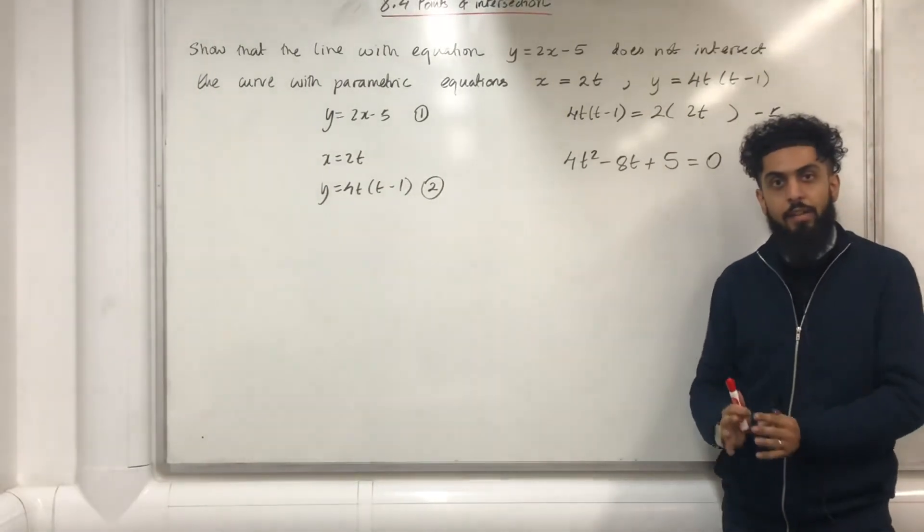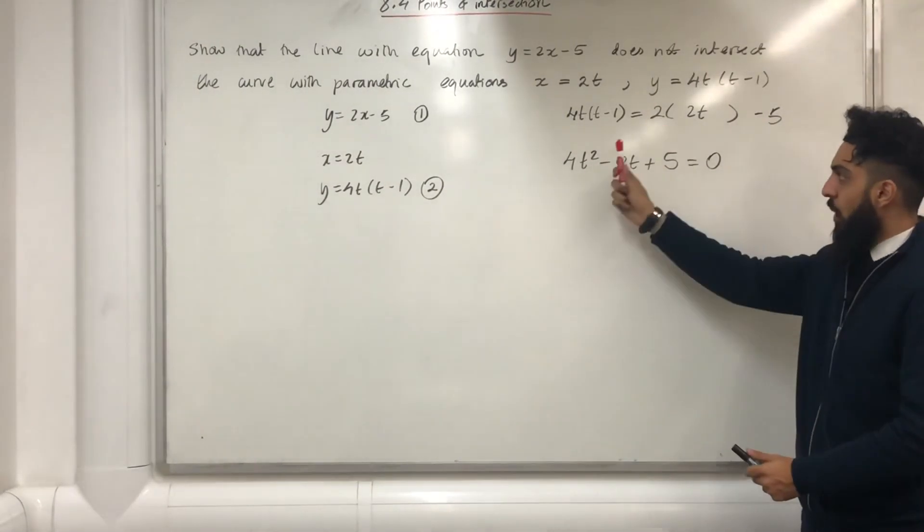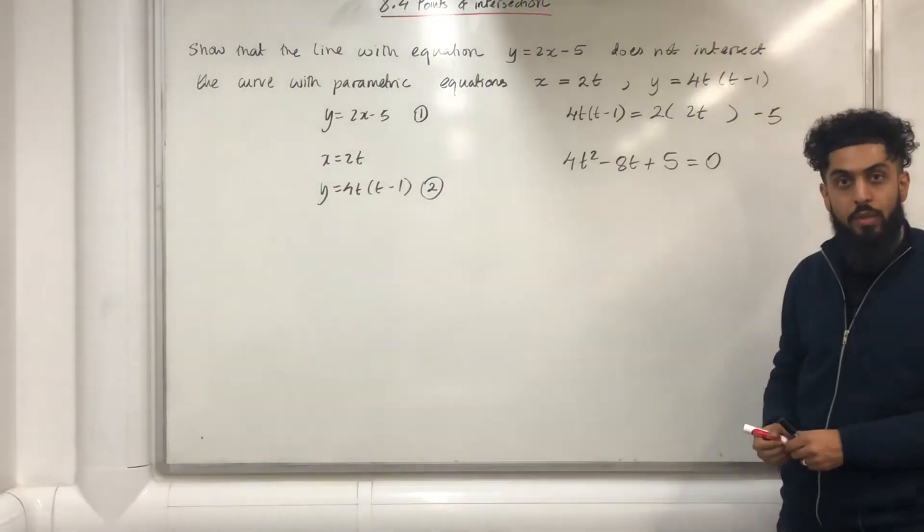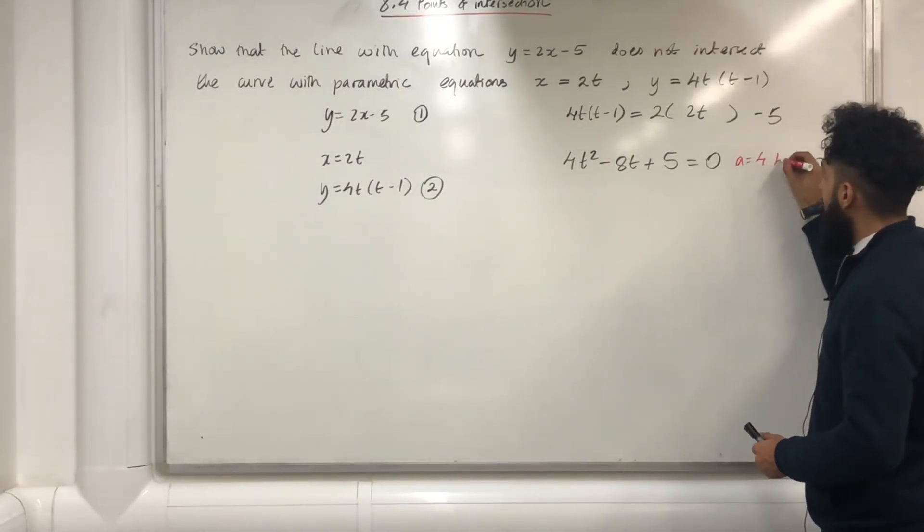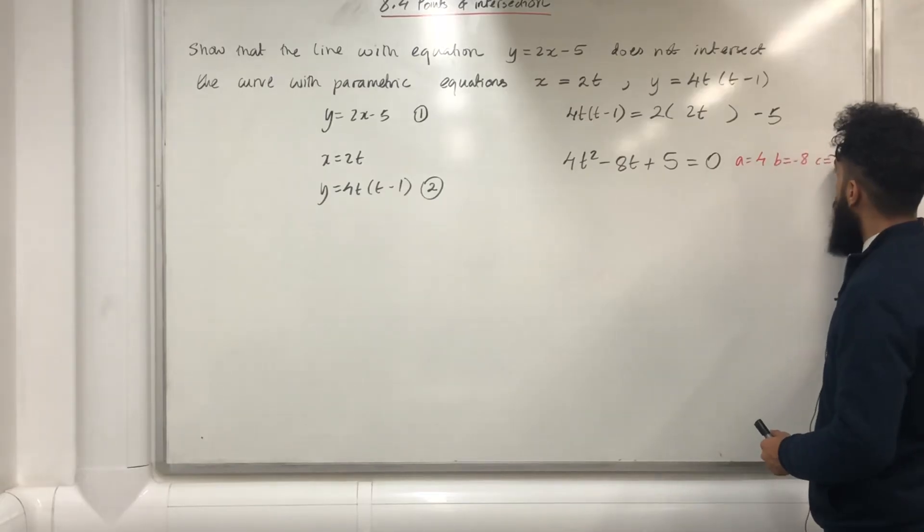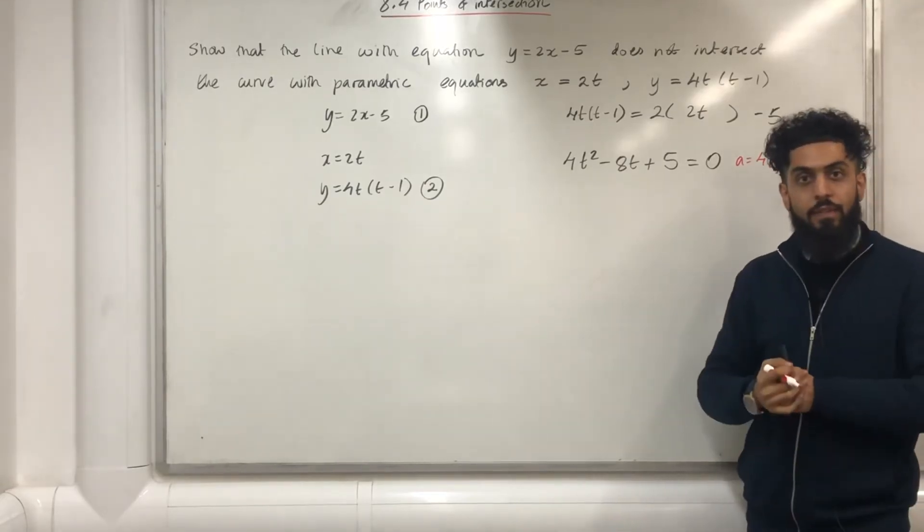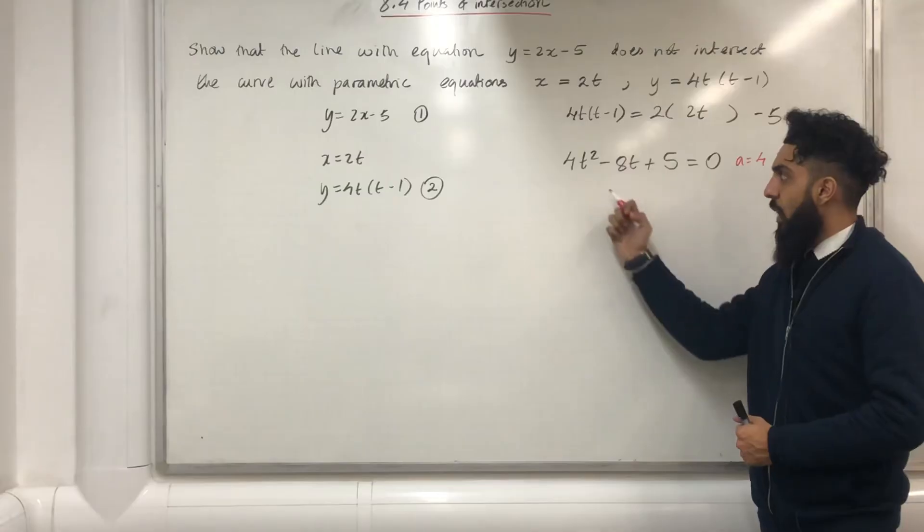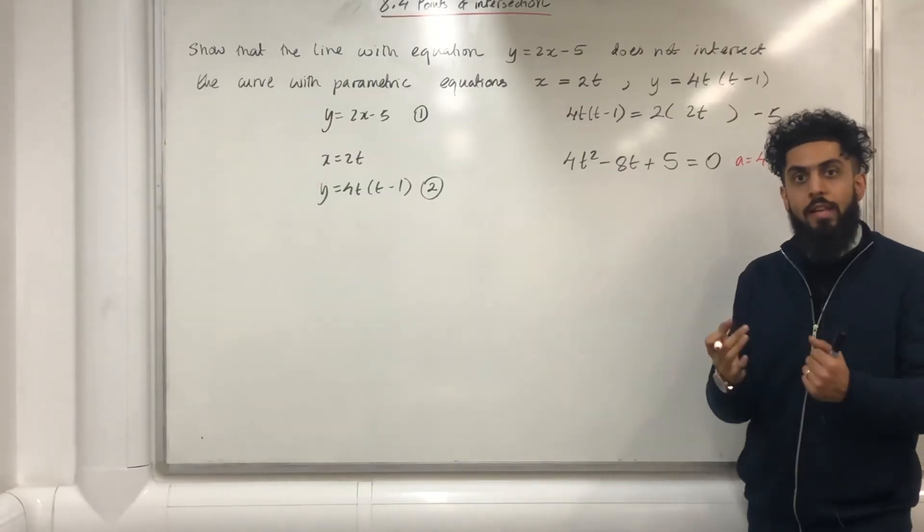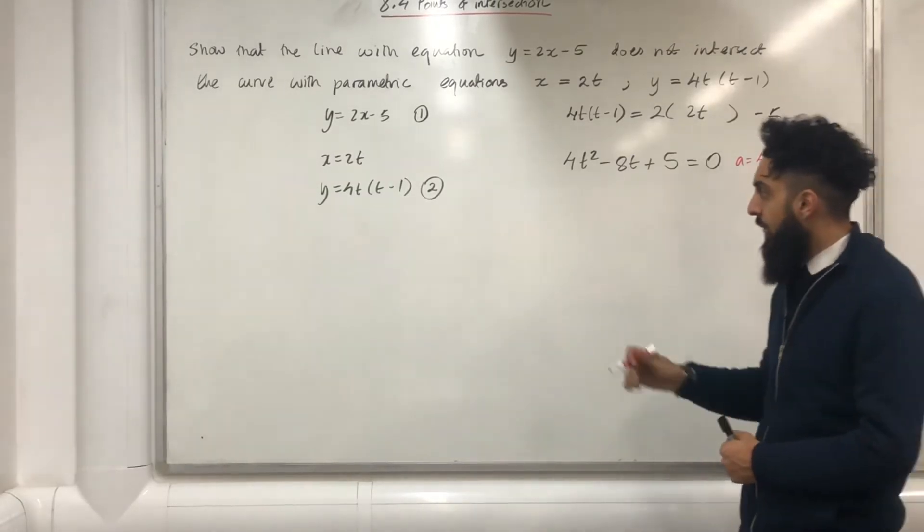After expanding and taking everything to one side, I end up with this quadratic equation. For this quadratic equation, a is equal to 4, b is equal to minus 8, and c is equal to 5. My next step is to find the discriminant of this particular quadratic equation. The discriminant is just b squared minus 4ac.